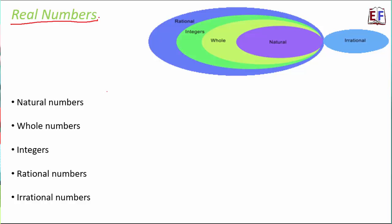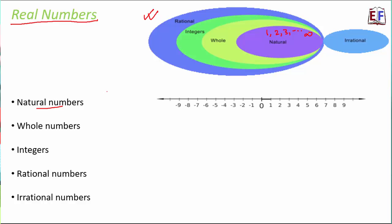In this lesson we are going to deal with real numbers. This picture very clearly shows what includes what. Natural numbers start from 1 — one, two, three, and so on to infinity. On the number line, all numbers starting from 1 to infinity are natural numbers, and they are denoted by capital N.